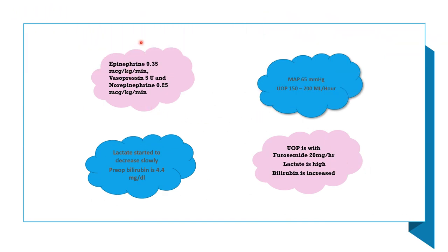The intensivist stated the patient was on epinephrine 0.35 mcg/kg/min, vasopressin 5 units/hour, and norepinephrine 0.25 mcg/kg/min. The surgeon noted they could maintain mean arterial pressure of 65 and urine output of 150 to 200 mL/hour. However, the intensivist countered that urine output required Lasix 20 mg/hour, and lactate remained steadily high.